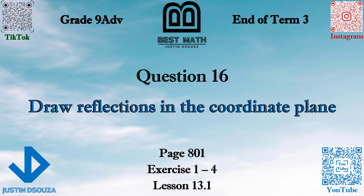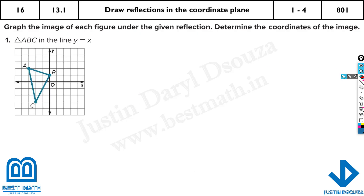In this question we will draw reflections in the coordinate plane. We have been given triangle ABC and we need to reflect it along the line y is equal to x. y equals x is a 45 degree line which passes through the center. This line acts as the mirror and the entire image must be reflected accordingly.